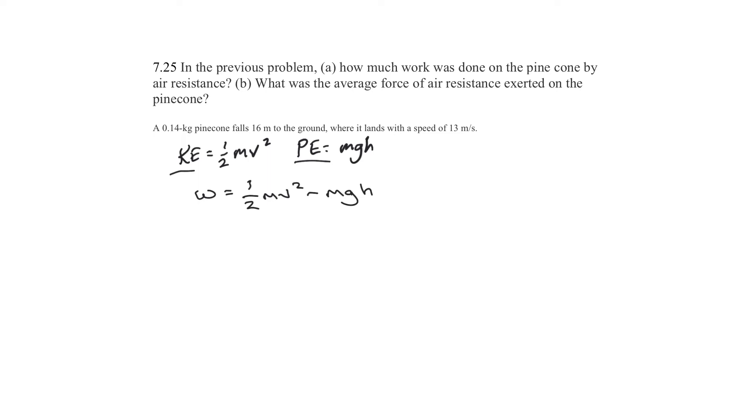So this is how you would get a negative work. You'll subtract the lower kinetic energy minus the larger potential energy, and you'll end up with how much work the air resistance did in order to slow down the pine cone. Okay, so let's fill this in.